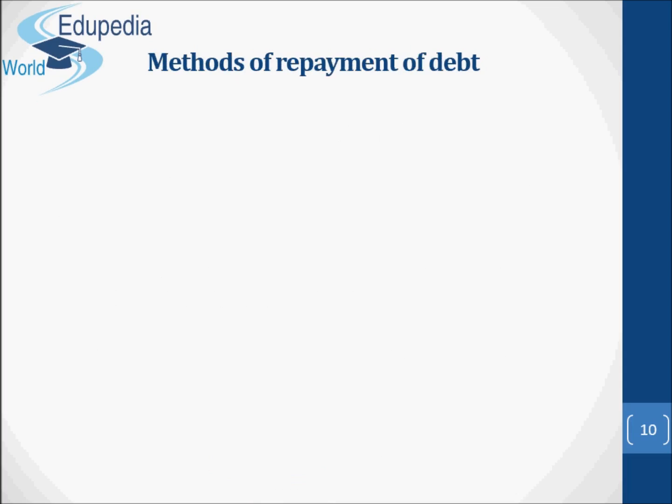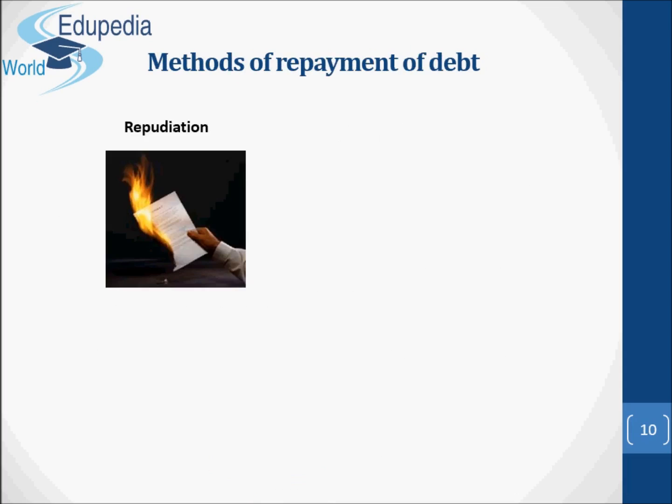Regarding the methods of repayment of debt — first, repudiation. It means refusal to pay a debt by governments. This method was followed by the USA after the Civil War and by the USSR after the 1917 revolution. This method is undesirable and has not been used recently anywhere in the world, as repudiation shakes the confidence of the people in public debt and may provoke retaliation from creditor countries.